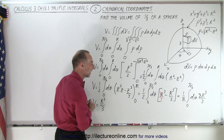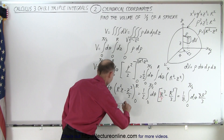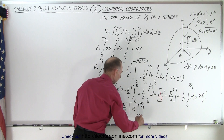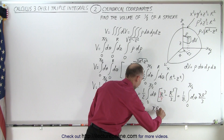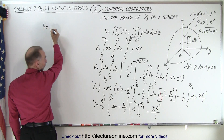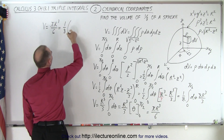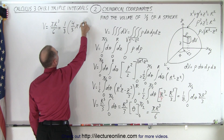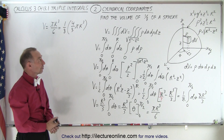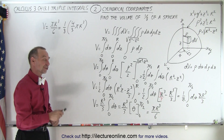So r³/3 times the integral from 0 to π/2 of dθ. That's an easy integral — it equals r³/3 times θ evaluated from 0 to π/2, which gives us πr³/6. You can see that the volume equals πr³/6, which is indeed 1/8 of the volume of a sphere, (4/3)πr³. Notice that 1/8 times 4/3 πr³ gives you πr³/6, confirming that we get 1/8 the volume of a complete sphere. In this case, we used cylindrical coordinates instead of spherical coordinates.